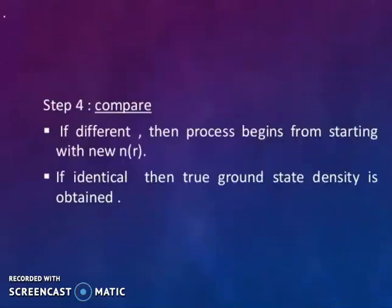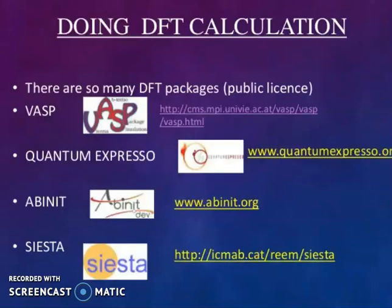Step four: compare. If different, then process begins from starting with new n(r). If identical, then true ground state density is obtained.